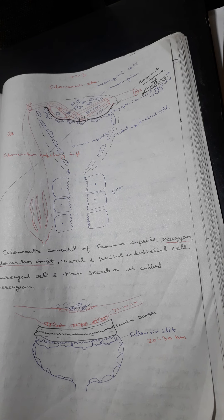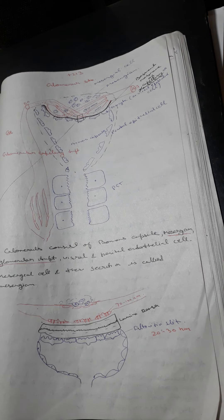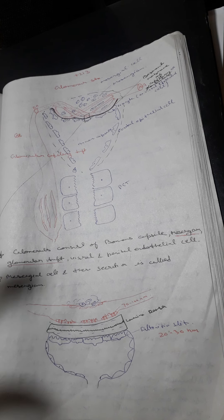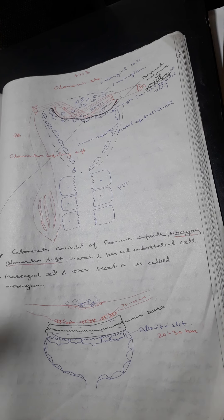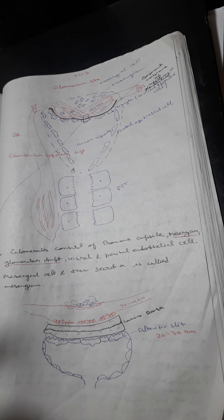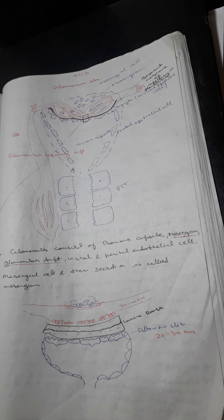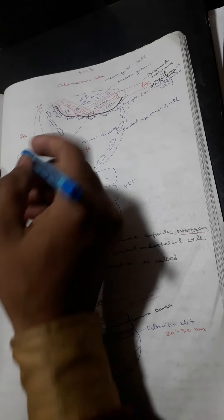In this video we will talk about the structure of the glomerulus. The glomerulus is the part of the nephron which helps in the filtration of substances from our body fluid.